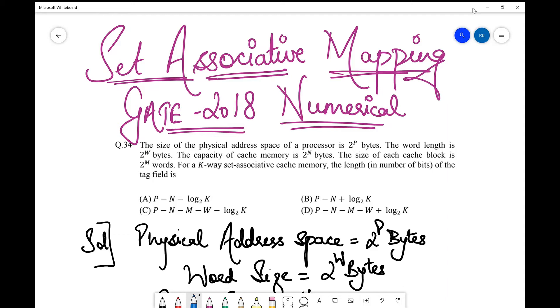Let's see what the question is. The question says that the size of the physical address space of a processor is 2^p bytes.